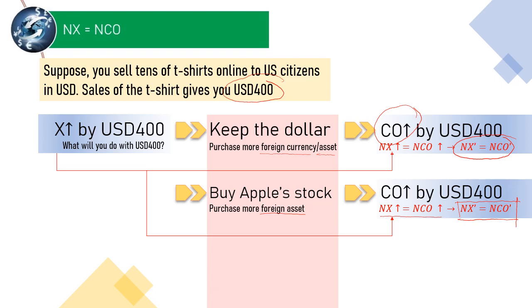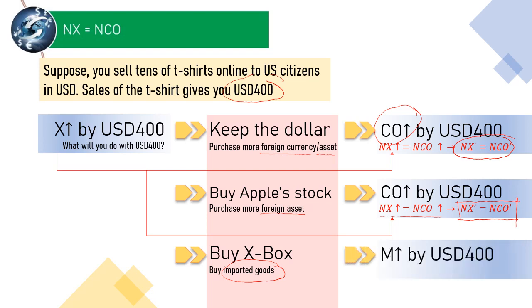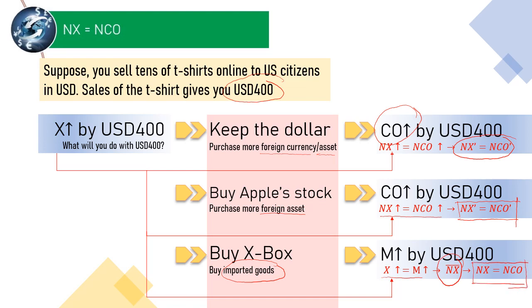The third possibility is you may use the dollar to buy US company products online. It has nothing to do with the net capital outflow. Here, import increases, and then export and import will cancel out each other, leaving net export constant and no change in net capital outflow either. At the end, net export is again evidently equal to net capital outflow.